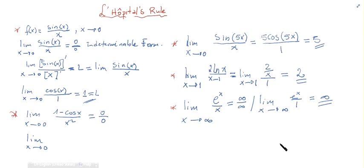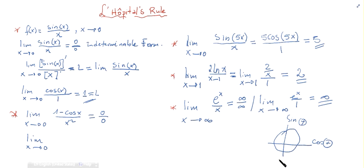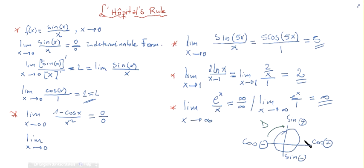To remember the derivative of cosine, think of the unit circle: sine is positive in one region, cosine positive in another. Moving clockwise around the unit circle corresponds to differentiating, while the reverse direction corresponds to integrating. So the derivative of minus cosine is sine.